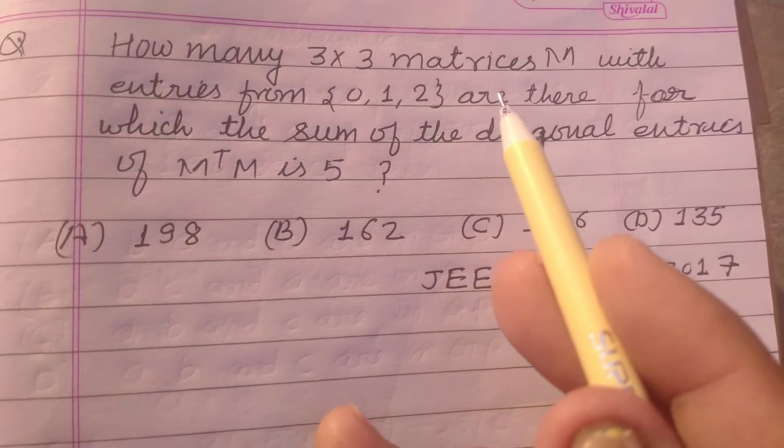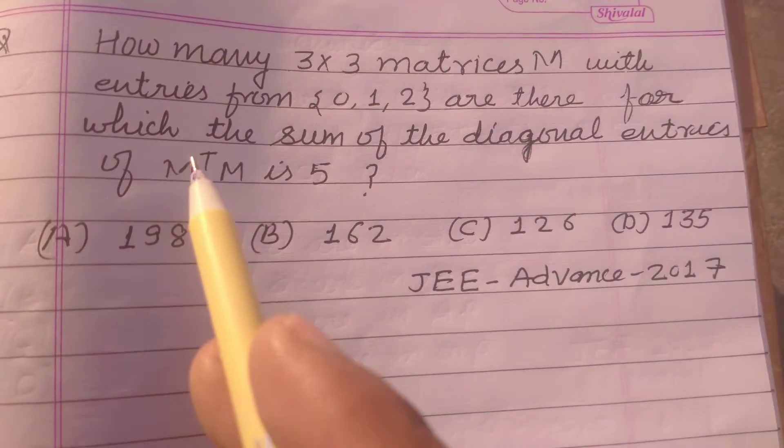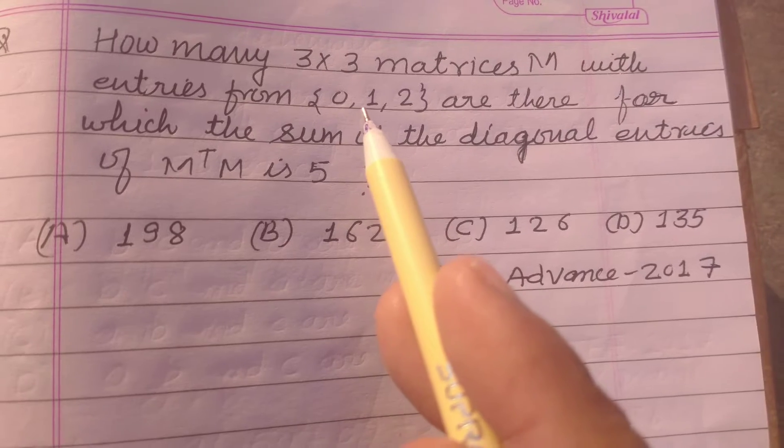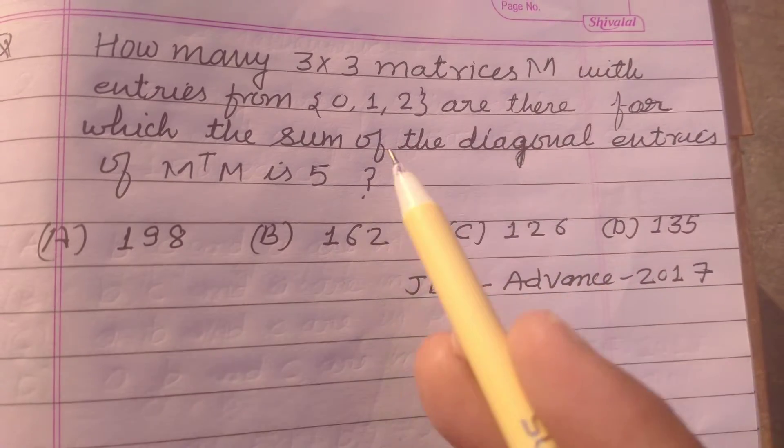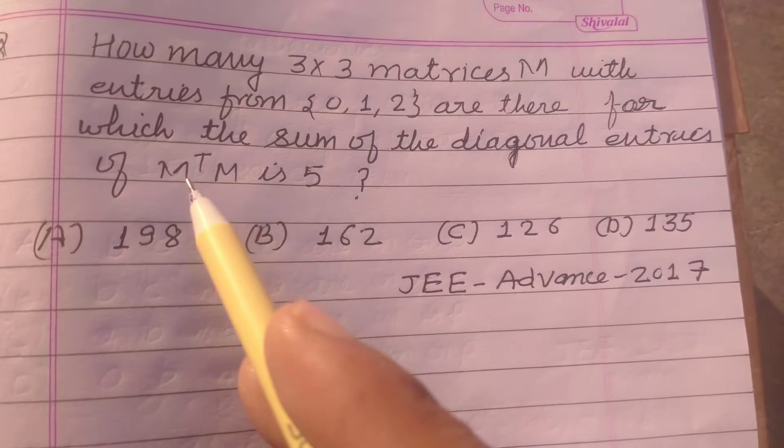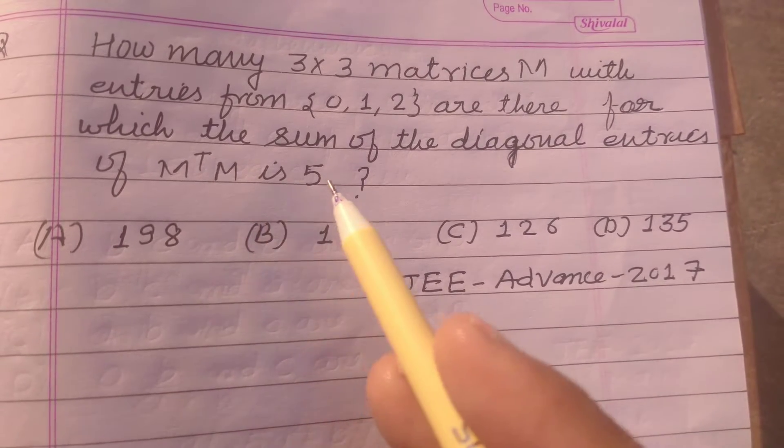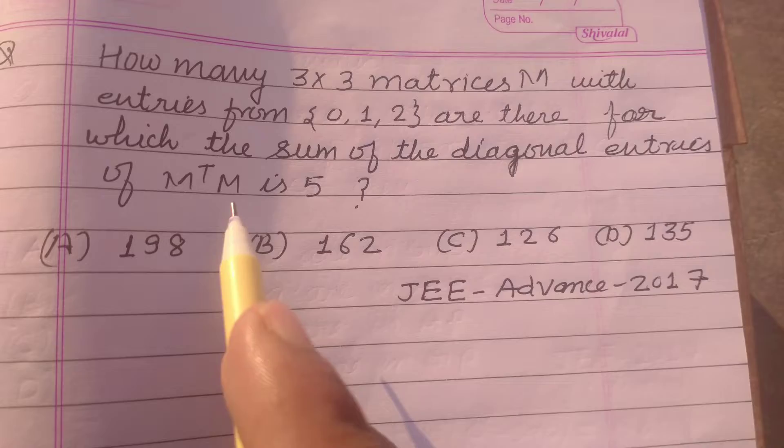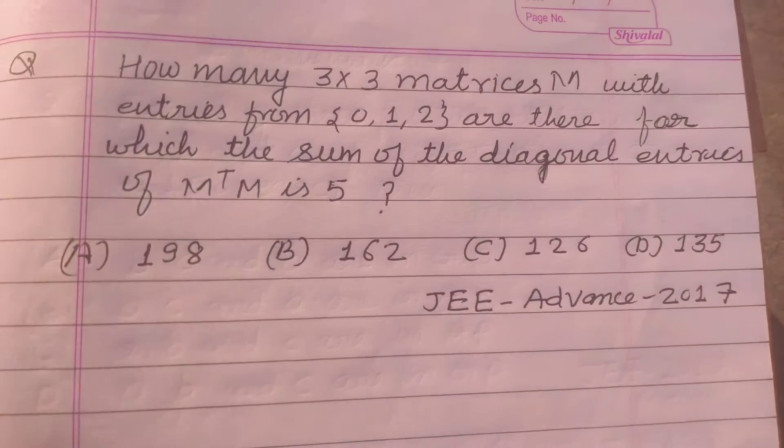How many 3 by 3 matrices M with entries from set 0, 1, 2 are there for which the sum of the diagonal entries of MT into M is 5? MT means transpose matrix of M.